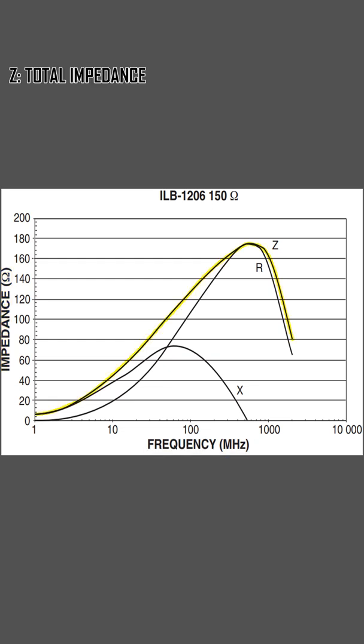Z is the total impedance, R resistance, and X reactance. There are three main zones within the chart: the inductive, resistive, and capacitive zones.